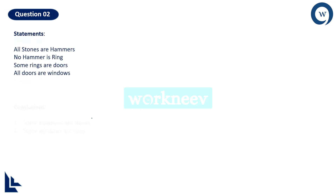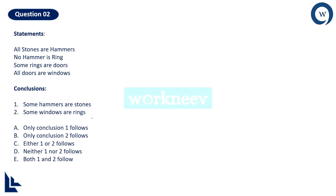Question number two has four statements and two conclusions. First, reverse the sentences and check. All stones are hammers — in the format All A are B — can be reversed as Some B are A, so Some hammers are stones. Do you see Some hammers are stones in the conclusion? Yes! That means it is perfectly fine. I can eliminate option B and option D because they say only conclusion two follows and neither follows respectively.